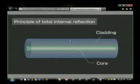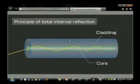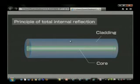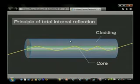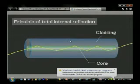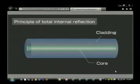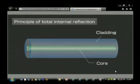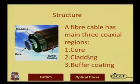Here is the principle of total internal reflection shown via animation. You can see that a light ray is entering the fiber optic cable and it continues with successive total internal reflections propagating through the fiber optic cable.